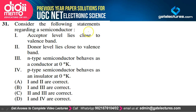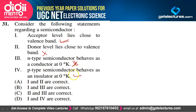Regarding semiconductor energy levels: donor level lies close to the conduction band (correct); acceptor level lies close to the valence band (correct); N-type semiconductor does not behave as a conductor at zero kelvin; P-type semiconductor behaves as an insulator at zero kelvin. Option D satisfies our explanation.